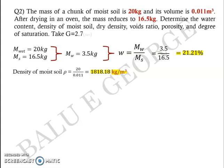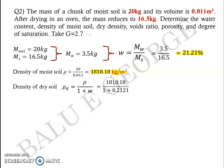To get the dry density or the density of the dry soil, you know rho d is equal to rho by 1 plus w. Rho is 1818.18, w the water content is 0.21. So 1818.18 by 1 plus 0.2121 will give you a value of 1500 kg per meter cube. That is the value of density of dry soil.